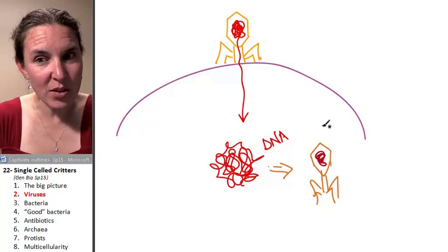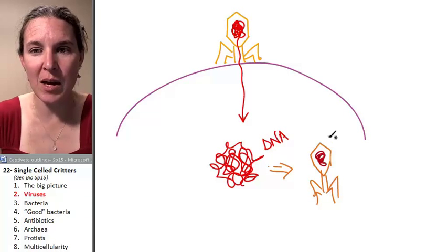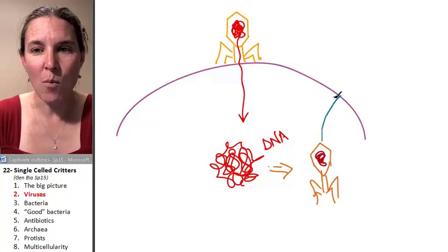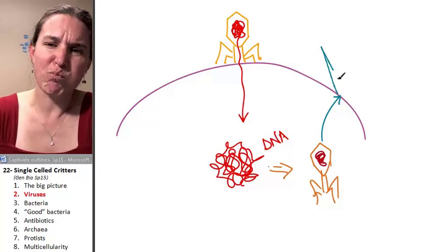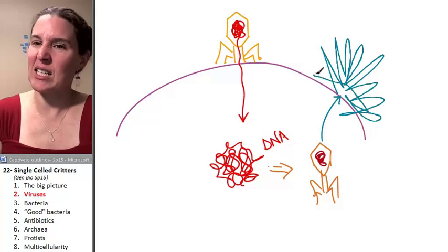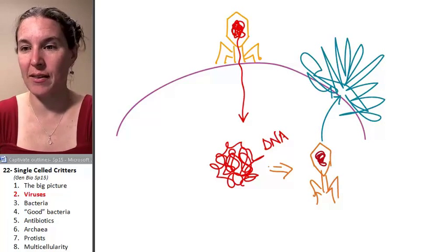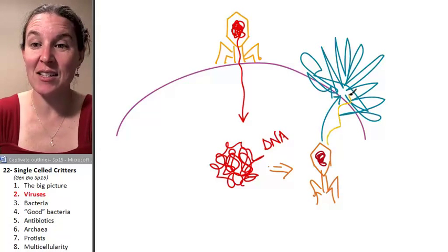And so your cell suddenly is hijacked by this DNA that the virus squirted in and begins to madly build a virus army. And then pretty soon the cell is like, whoa, there's a million baby viruses in here. And watch this - it's an explosion.